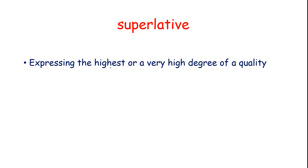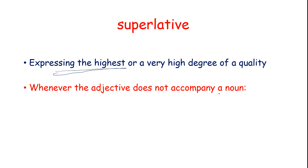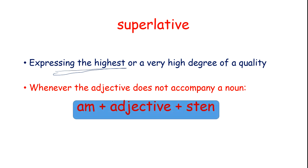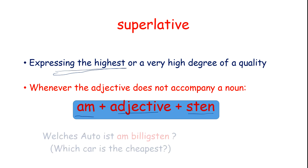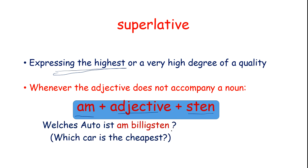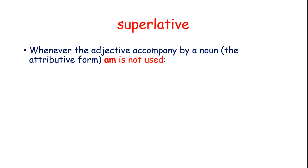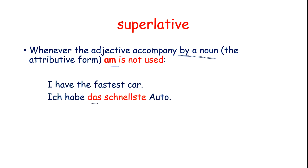Now is the Superlative form — expressing the highest or a very high degree of quality. Earlier we were comparing only two; now it is the highest — best among the rest. Whenever the adjective does not accompany a noun, we add am — adjective plus -sten. Like: Welches Auto ist am billigsten? There is no noun after the adjective, so we add am. Which car is the cheapest? Whenever the adjective accompanies a noun, we do not use am — we use the article and -ste. I have the fastest car — article plus -ste.